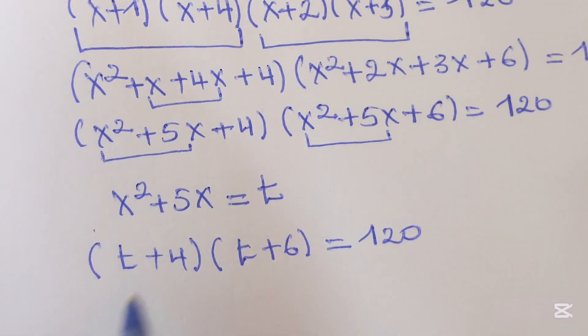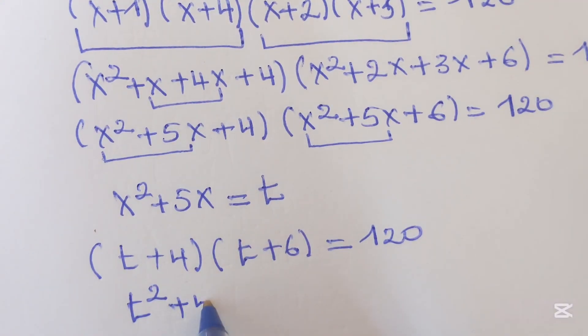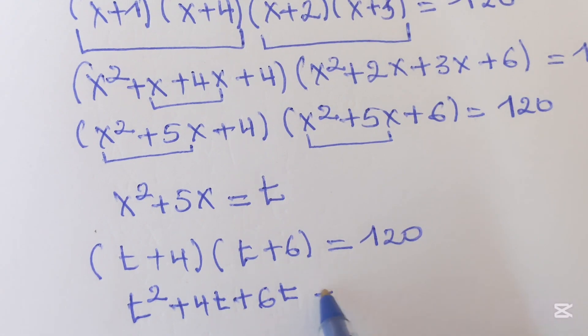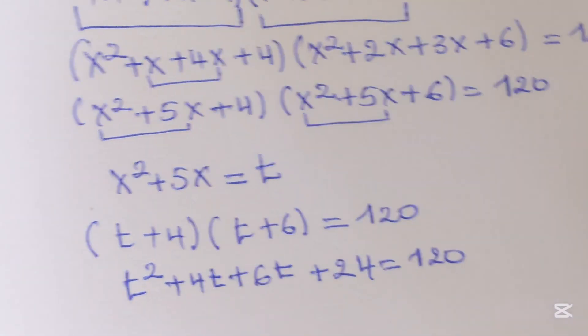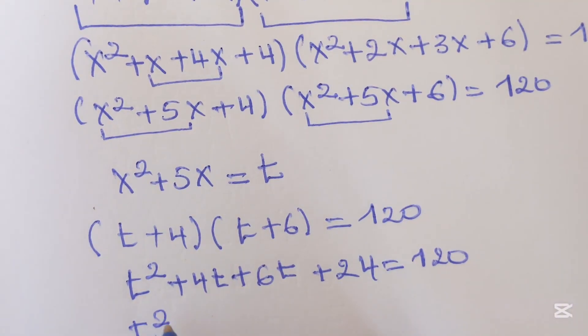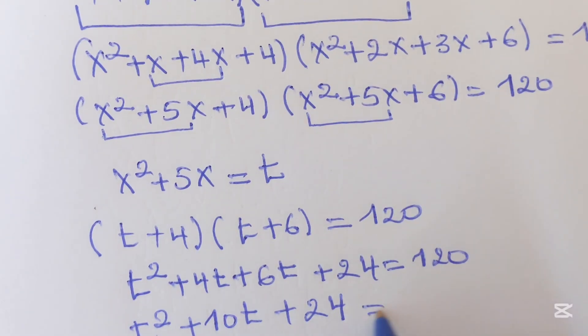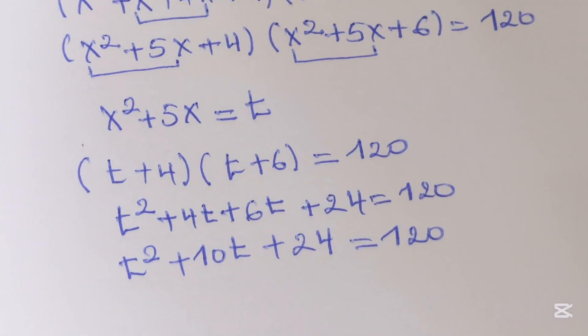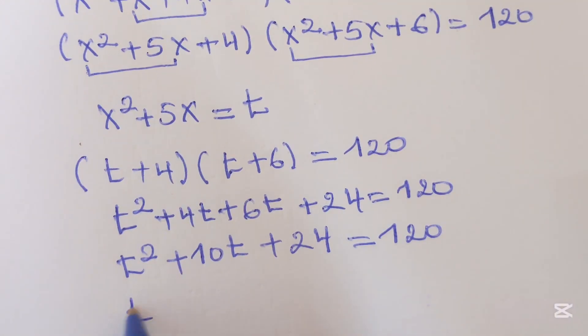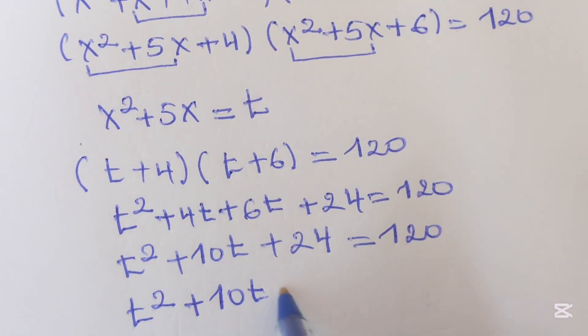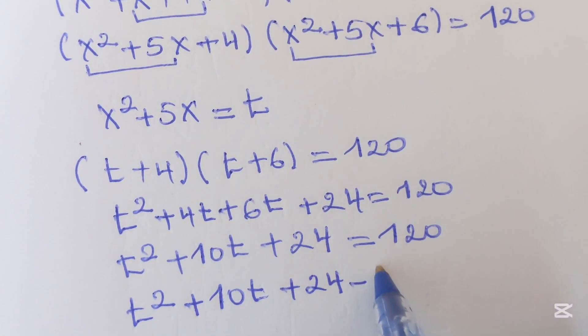By multiplying as we did, we can do this one as t squared plus 4t plus here 6t plus 24 equals 120. Now, t squared plus 10t plus 24 equals 120. Now, t squared plus 10t plus 24 minus 120 can be equals to 0.